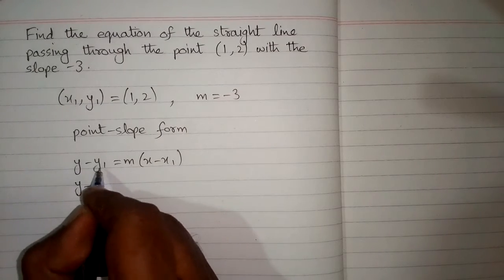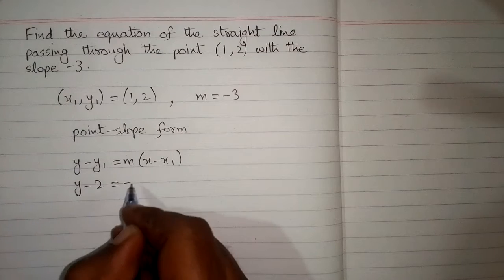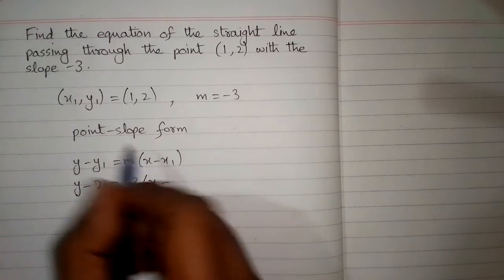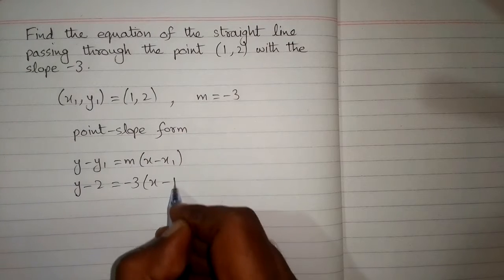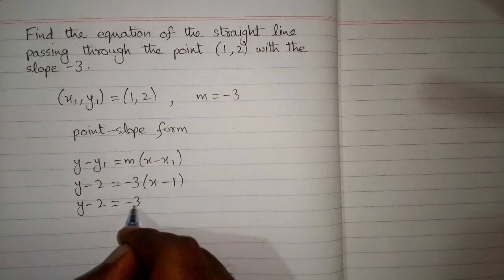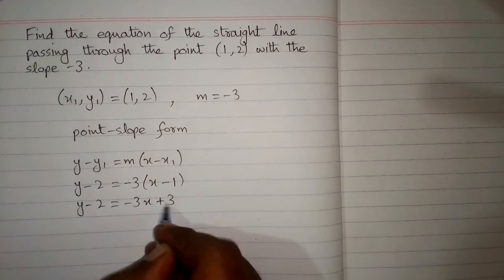So we put 2 in place of this y1 and the value of m is minus 3. So we put minus 3 in place of m then the value of x1 is 1. Now we have y minus 2 is equal to minus 3x and minus 3 times minus 1 is plus 3.